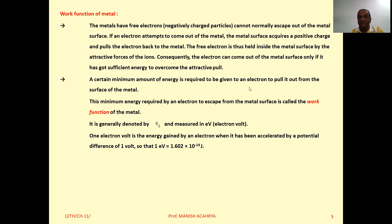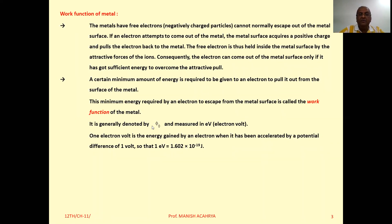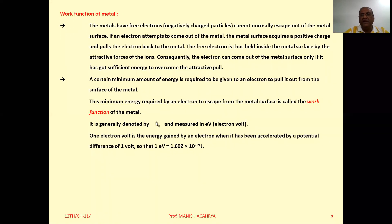But if electrons have sufficient energy to overcome this pull, they can definitely come out. It implies that to liberate the electron from the metallic surface — to make the electron free — some minimum amount of energy is required. That particular minimum amount of energy is called the work function of the metal, denoted by the symbol φ₀, and it is measured in electron volts. One electron volt is the energy gained by an electron when it is accelerated by a potential difference of one volt, equal to 1.6 × 10⁻¹⁹ joules.